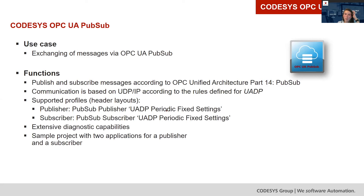OPC UA PubSub is not all the same — it is not guaranteed that you can communicate with any publisher or subscriber in the world, because profiles come into play. You have to support the same profiles to be able to communicate with each other. We support what are called periodic fixed settings. With the library, extensive diagnostic capabilities are included, so you can really do great diagnostics. We also have a sample project with two applications where you can try out the role of a publisher and a subscriber.